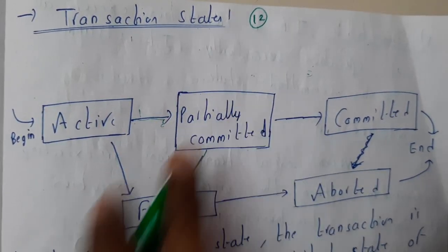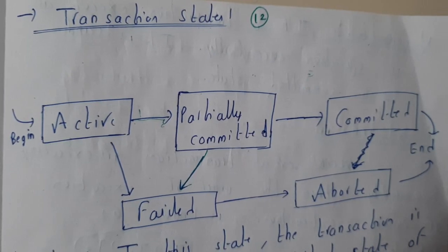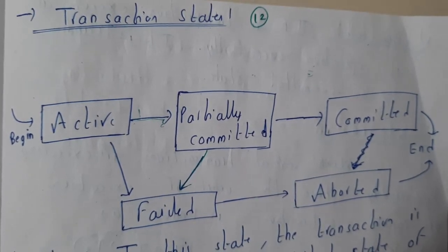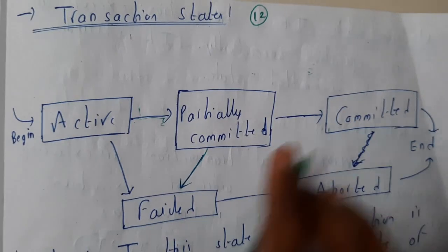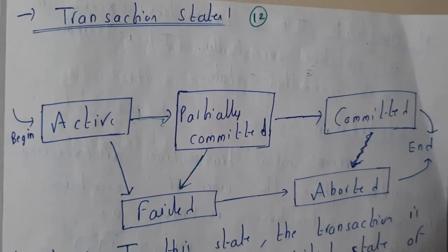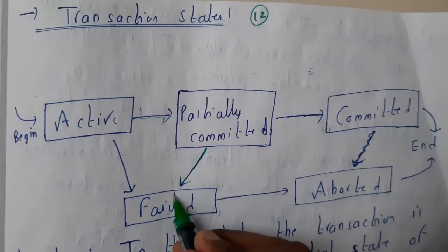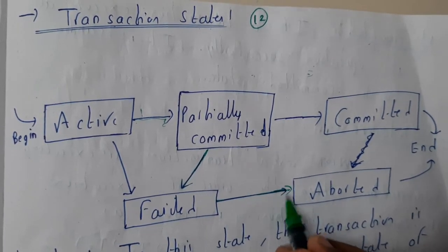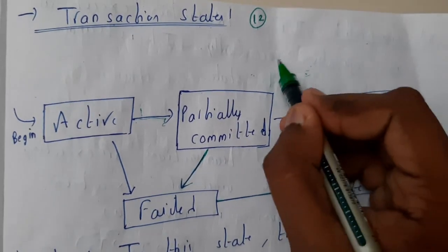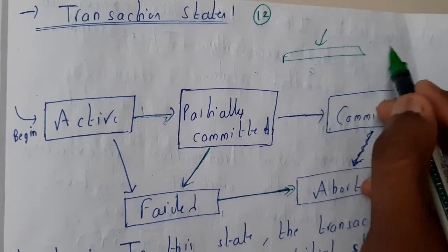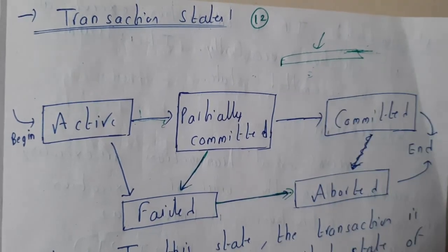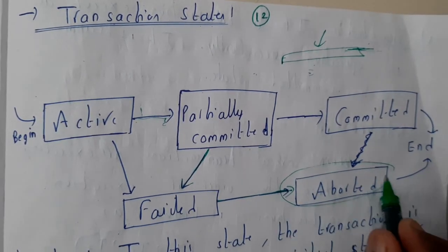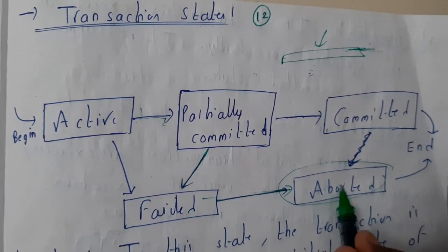Till that moment, the transaction that was committed — wherever it is done — is saved in our database. In that situation, if it fails, the only option is to abort it. It will be stored in the failed log, and you need to delete it. Deleting or stopping it permanently without any further execution is nothing but abort.